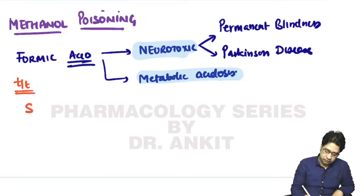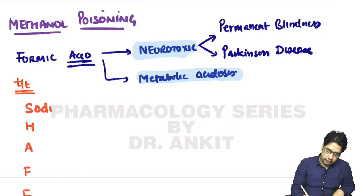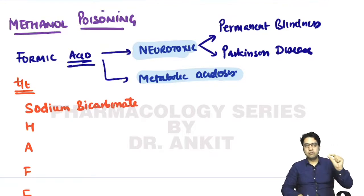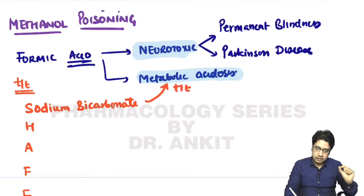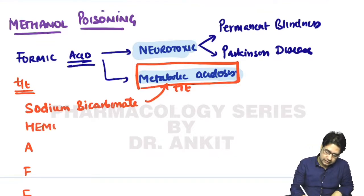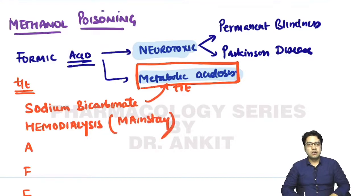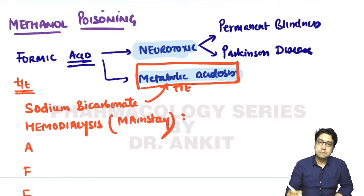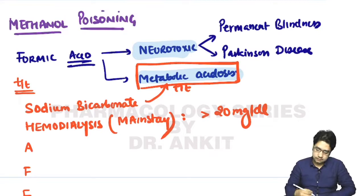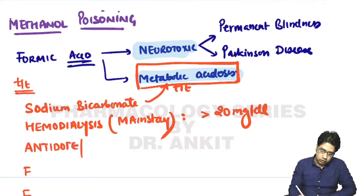For treatment of methanol poisoning, we use the mnemonic SCHAEFE. S stands for sodium bicarbonate, an alkaline substance given to treat metabolic acidosis. H stands for hemodialysis, which is the mainstay of treatment - it is mandatory if the blood level of methanol is more than 20 milligrams per deciliter.